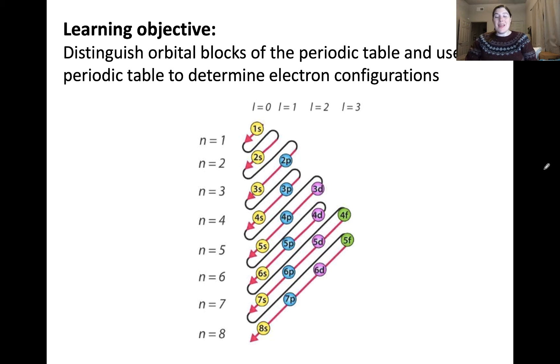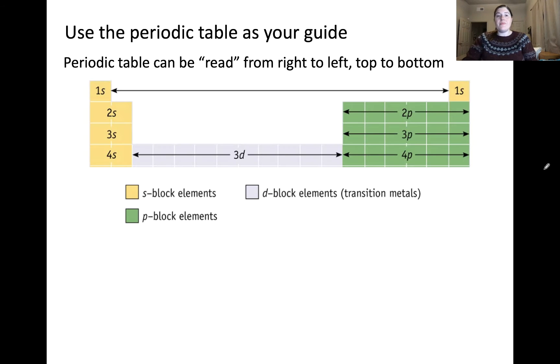And again, we're going to base this on where the atom is on the periodic table. Inspecting the periodic table, we can almost treat it like a book where the top left corner represents the orbital that's lowest in energy, the 1s.